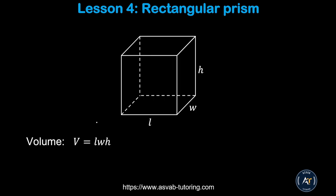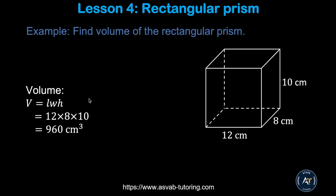Now we'll learn how to find the volume of a cube. The formula is: V = length × width × height. In this example, length = 12, width = 8, and height = 10. Multiplying all three gives a volume of 960 cubic centimeters.